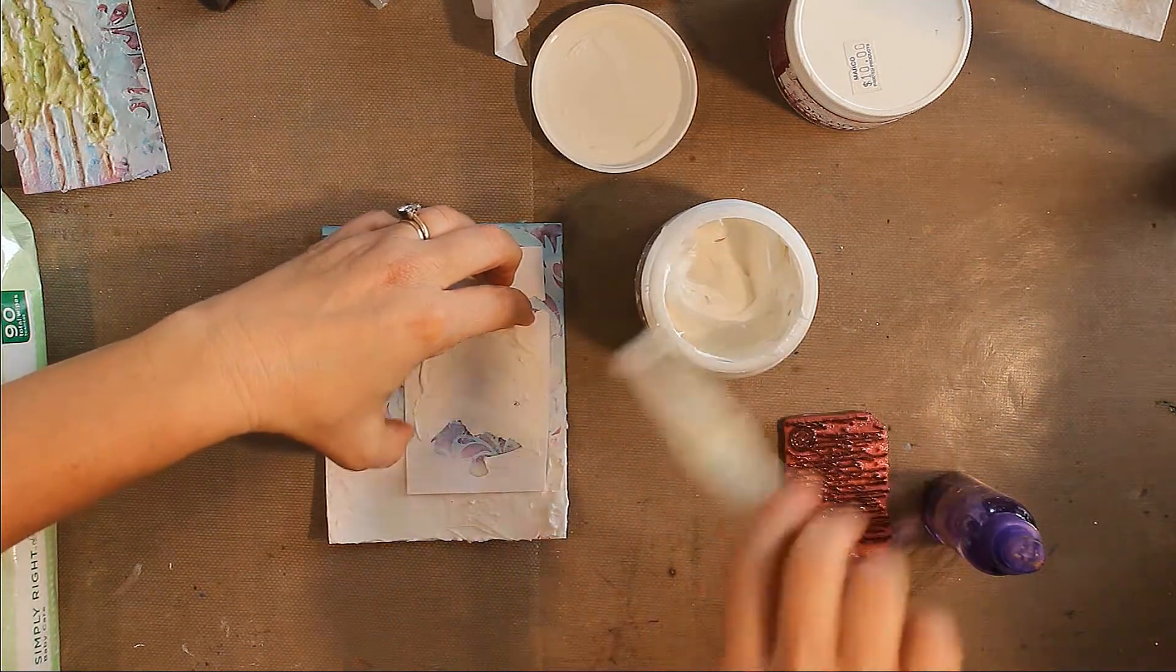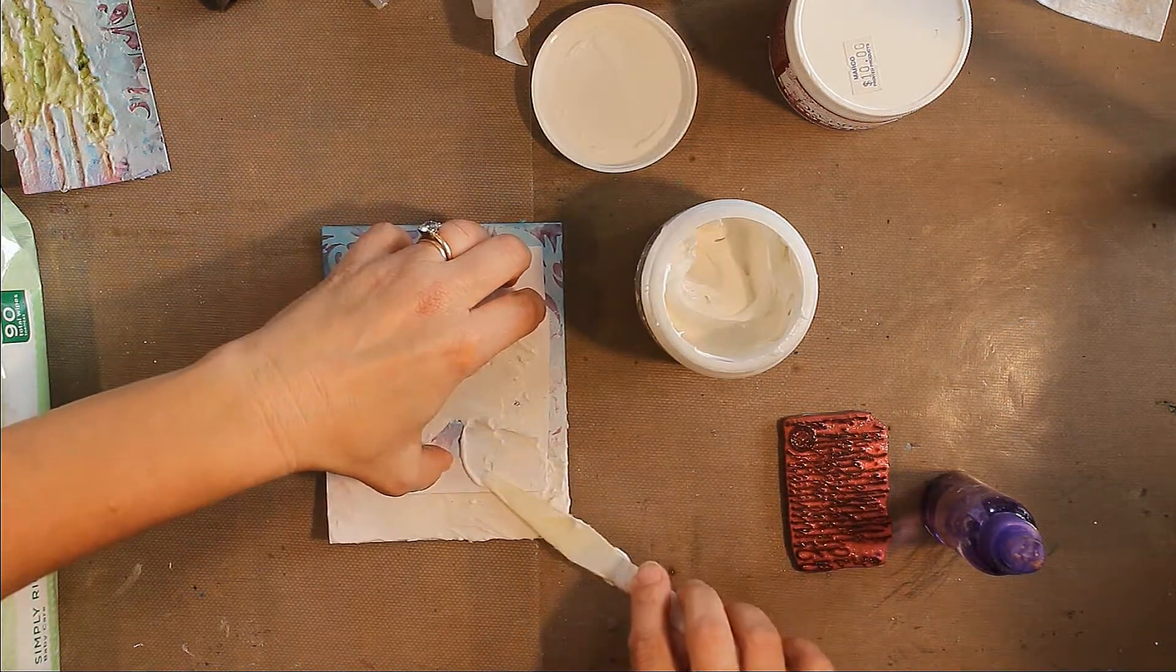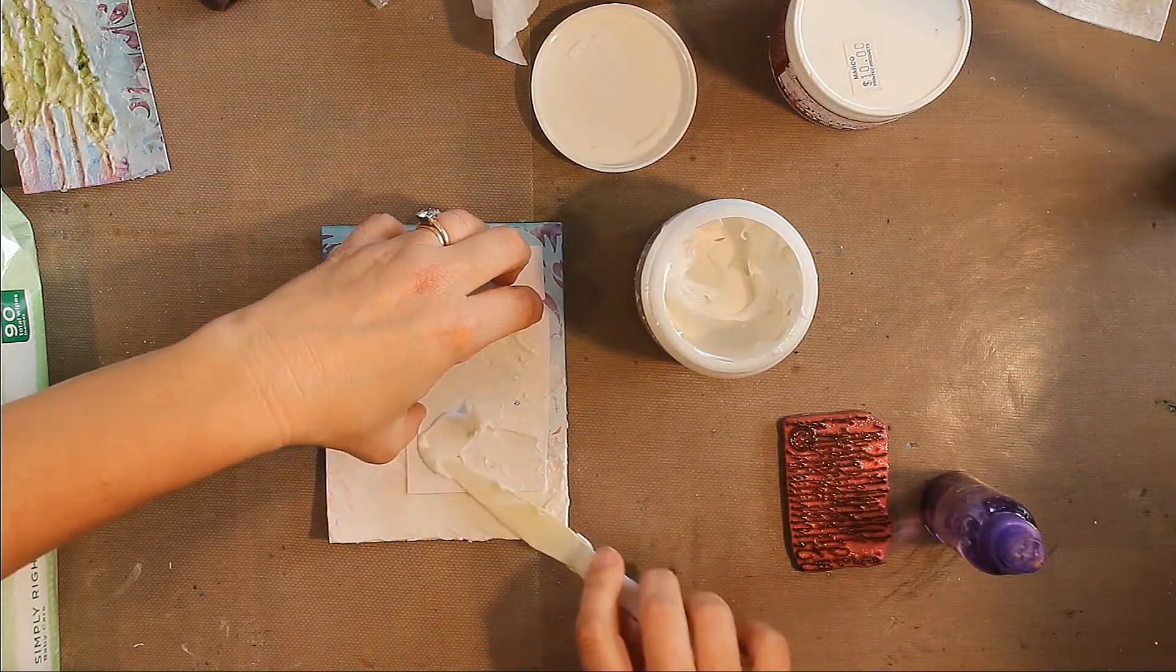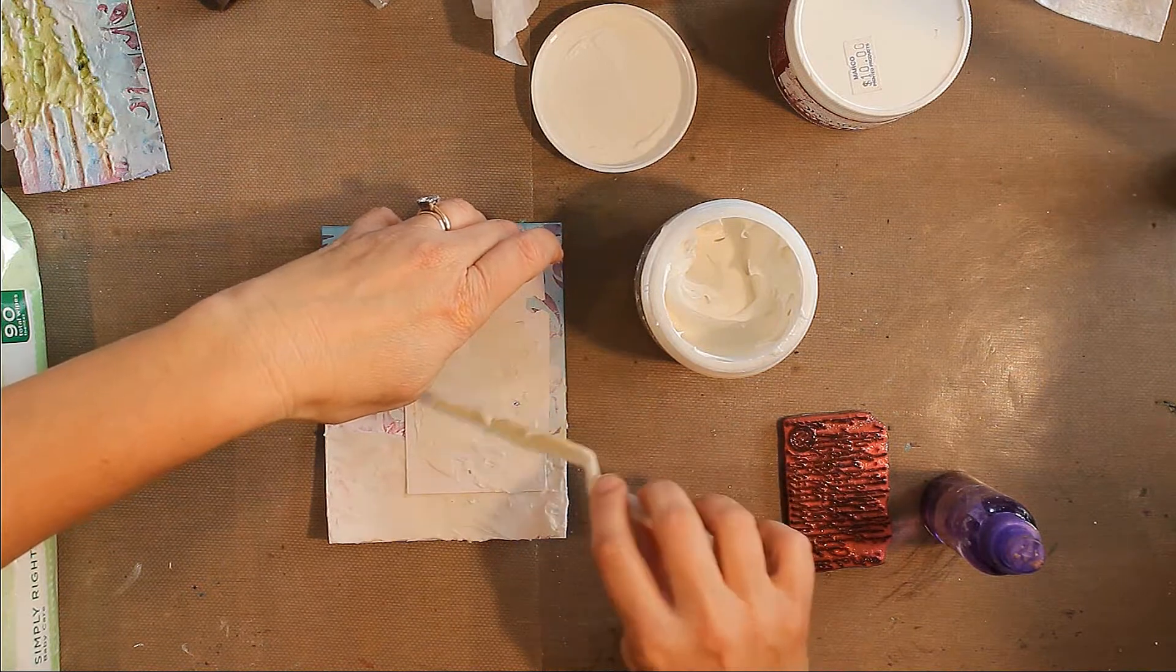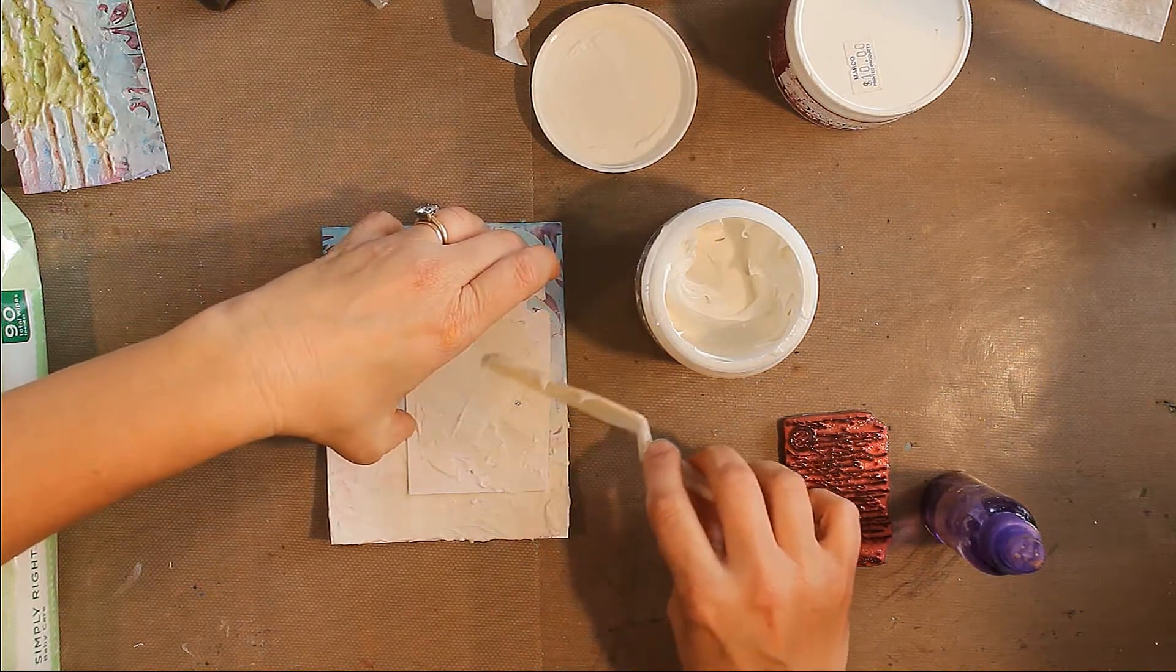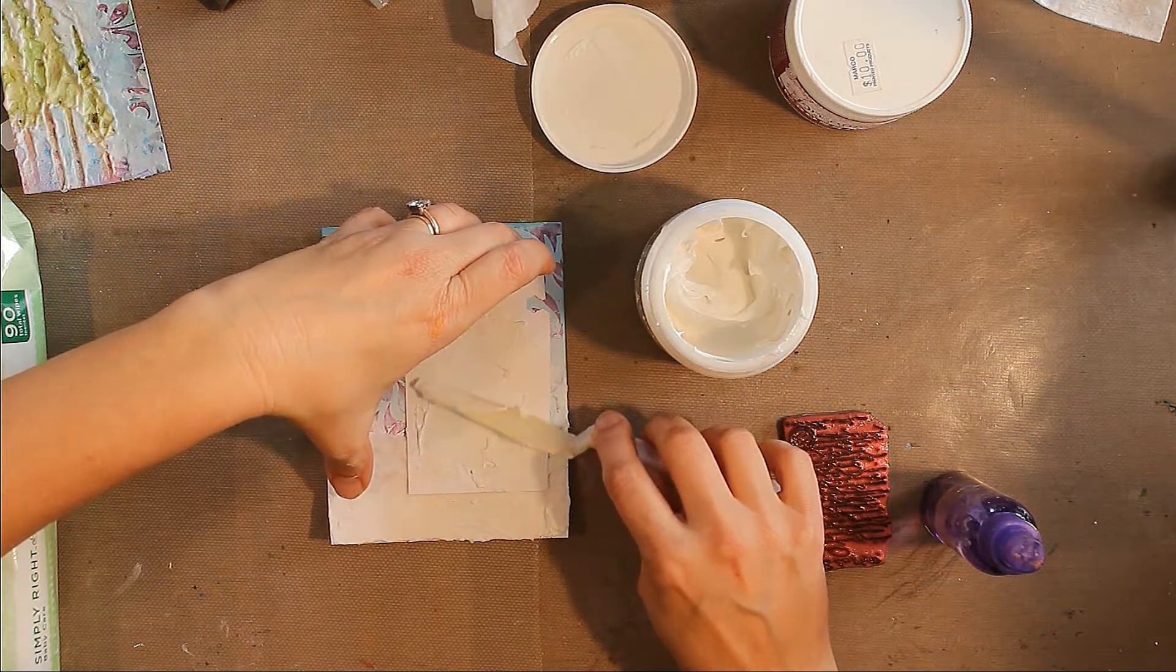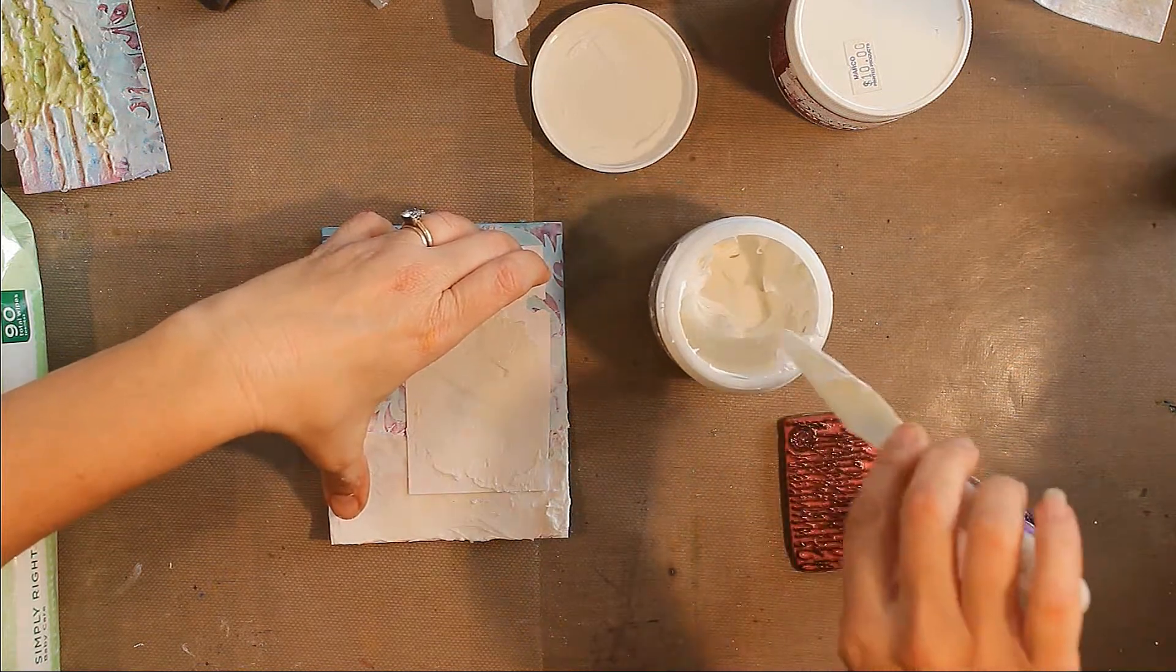Now we're going to do a little something extra with the stenciled Christmas tree so I'm going to get a moderate coat on there. Sometimes you have to play with it a little bit to get the amount on there that you would like. I want it to be fairly smooth for the technique that we're going to use.